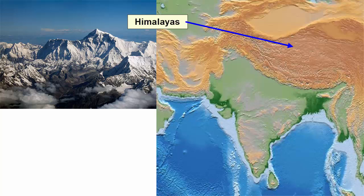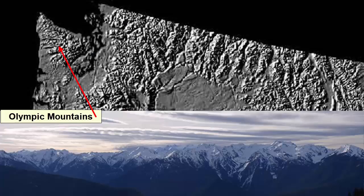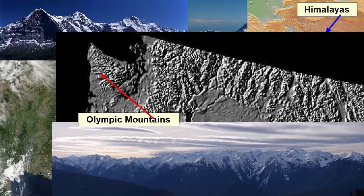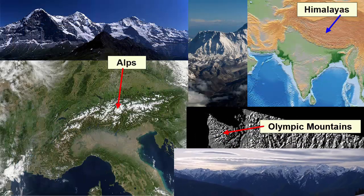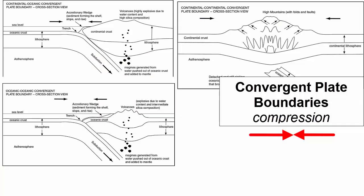The Himalayas in Asia, the highest elevation mountain system in the world. The Alps in Europe. And the Olympic Mountains in Washington State. What kind of mountains are all these? Fold and thrust mountains. When a region is subjected to compression, which happens at convergent plate boundaries, the land is squeezed and thickened, forming mountains.